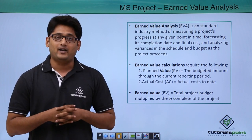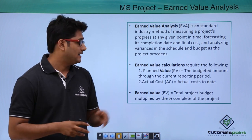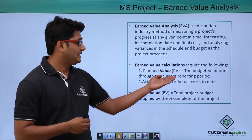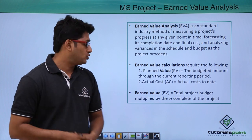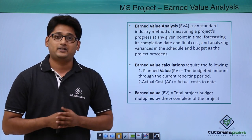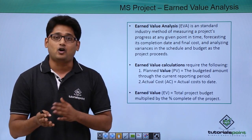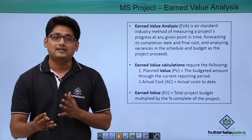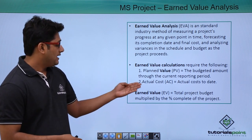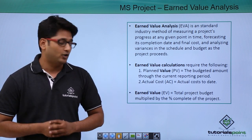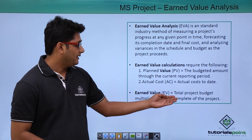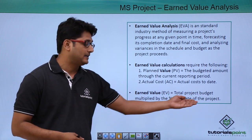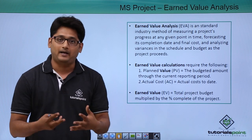For Earned Value Analysis we will be needing two things: first is the planned value, which is basically the budgeted amount, and also we need the actual cost, which is the actual cost of the project till date. Earned Value is also calculated by multiplying the total project budget by the percentage completed by the project.